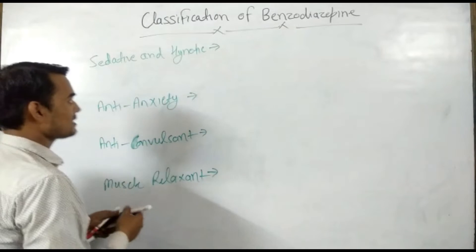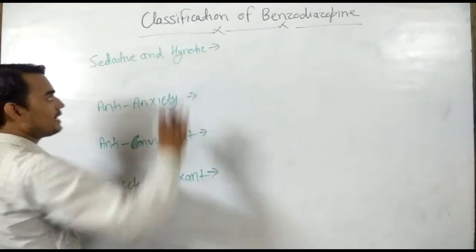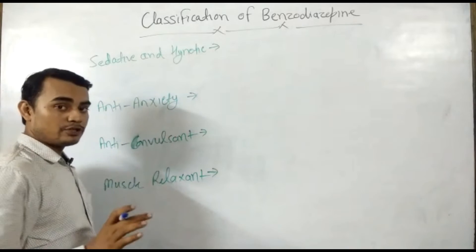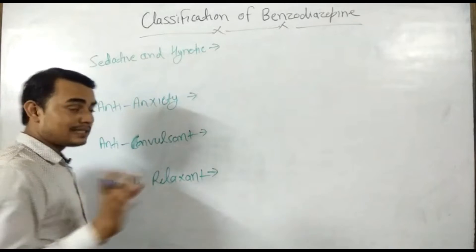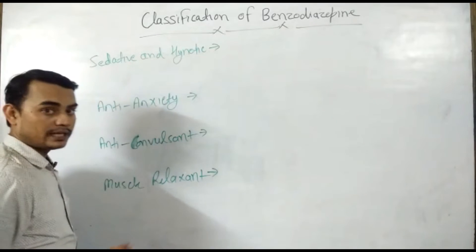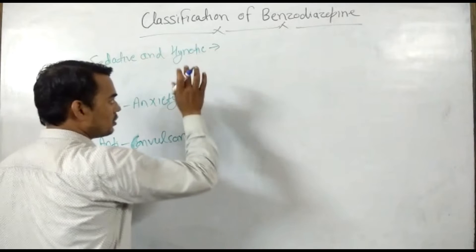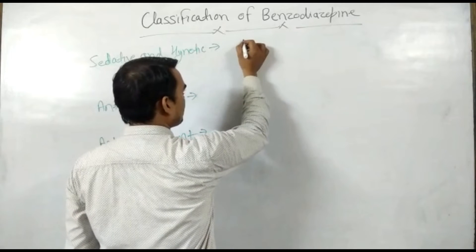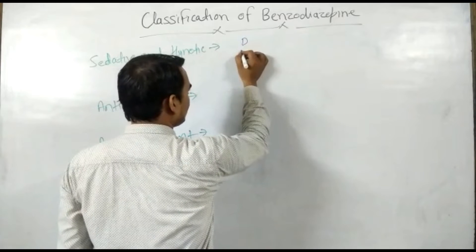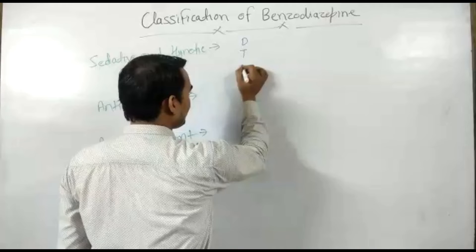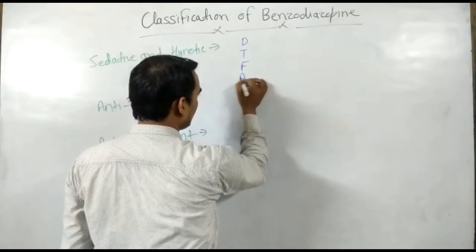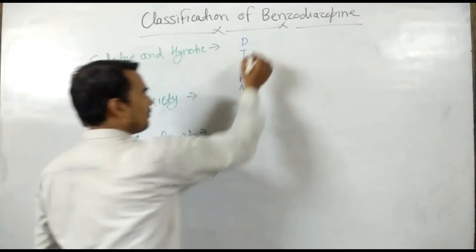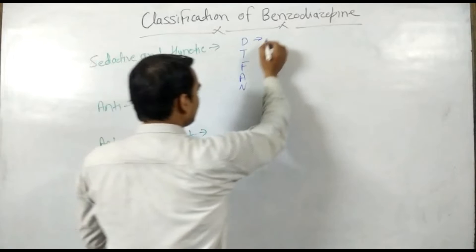Now, which benzodiazepines have sedative and hypnotic action? To remember this, remember one word: D-T-Fan. The drugs in this class have sedative and hypnotic action — remember the mnemonic D-T-Fan for this subclass.